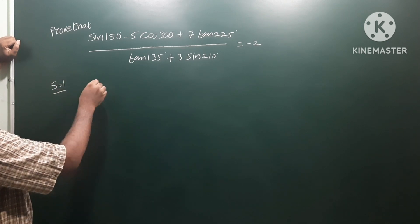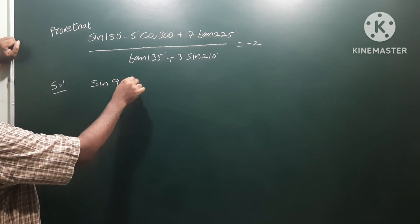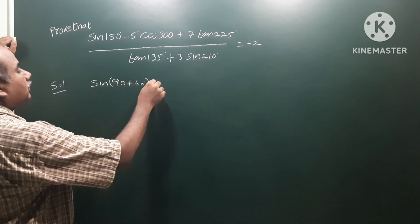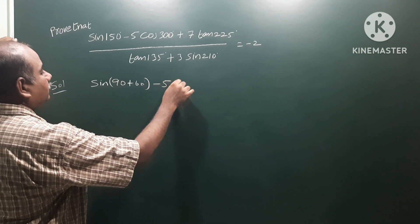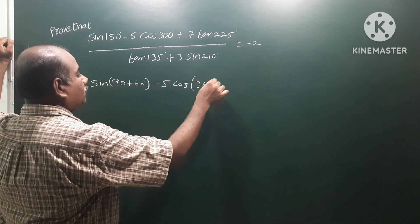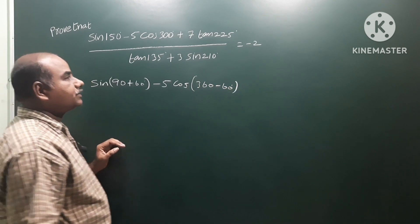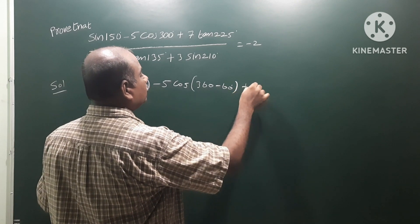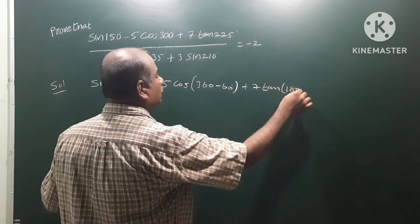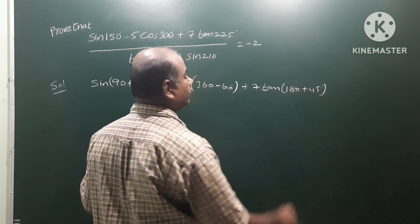sin150° can be represented as 90+60, minus 5cos300° can be represented as 360-60, and plus 7tan225° means 180+45.